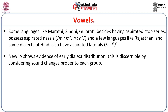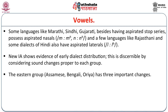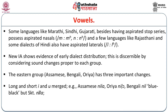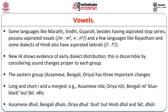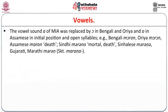New Indo-Aryan shows evidence of early dialect distribution, discernible by considering sound changes proper to each group. The Eastern group — that is Assamese, Bengali, and Odia — has three important changes. For example, in the long subgrouping, Assamese has dhuli, Bengali dhula, Odia dhuli, whereas Hindi and Sanskrit have dhul. The vowel sound o of Middle Indo-Aryan was replaced by o in Bengali and Odia, and er in Assamese, in initial position and open syllables.